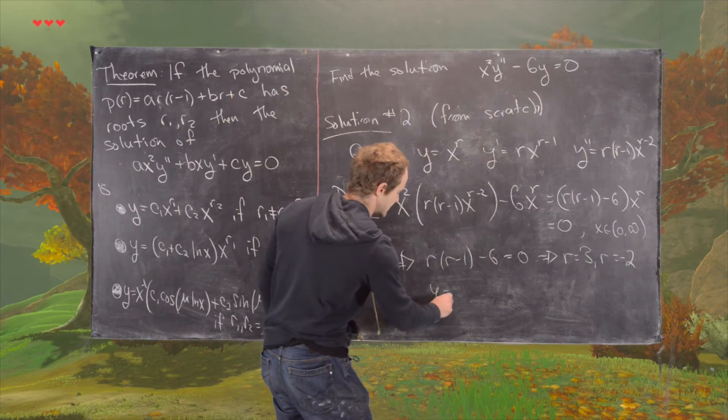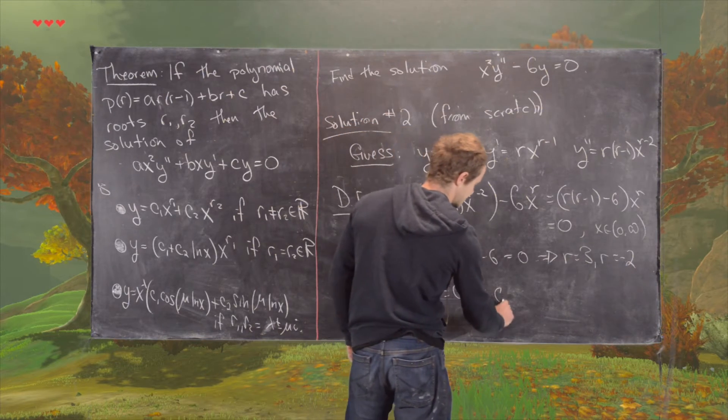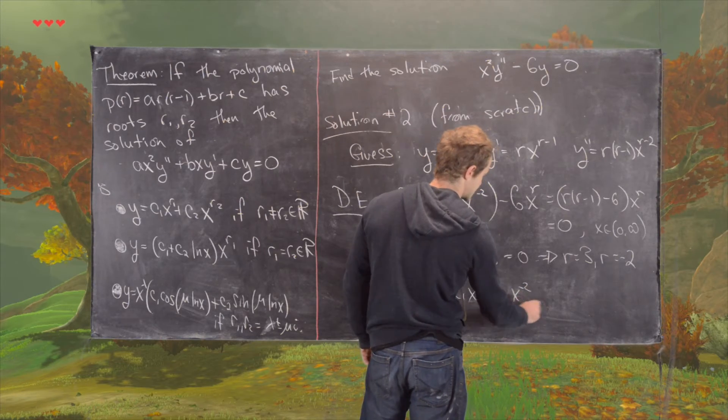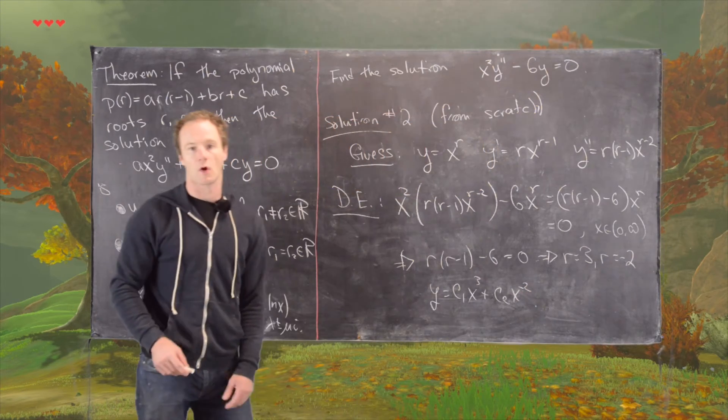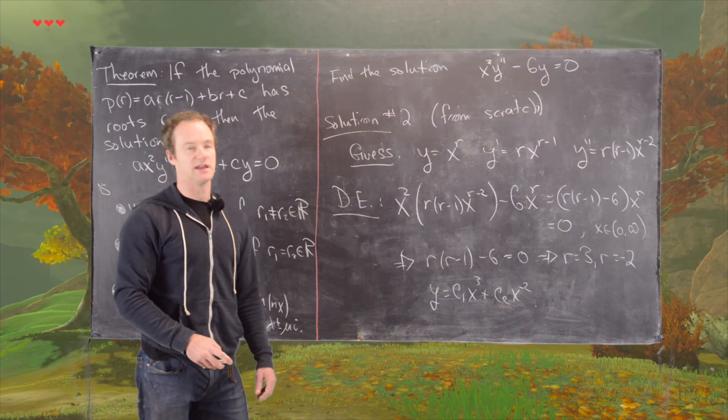Which gives us the same solution, c1 x cubed plus c2 x to the r minus 2, or c2 over x squared. So that's the end of this example.